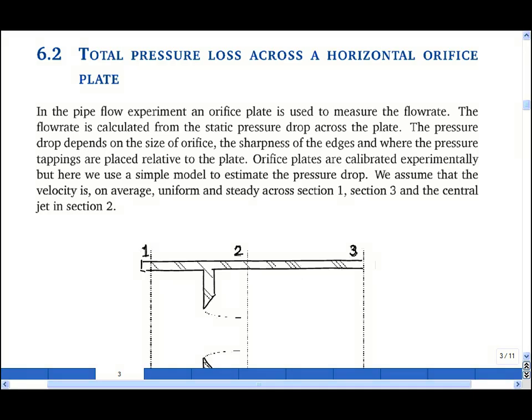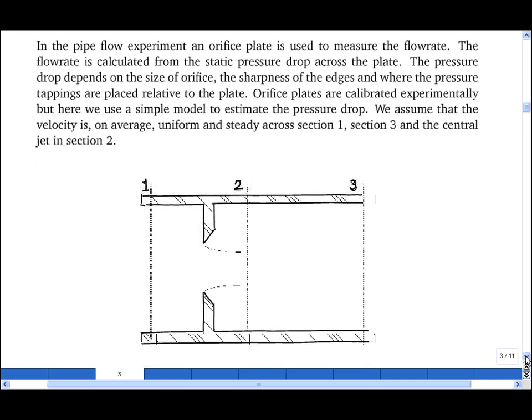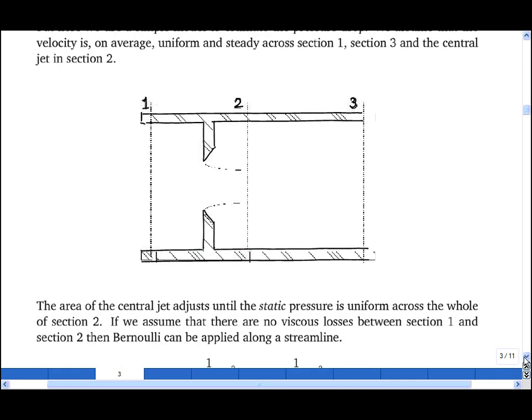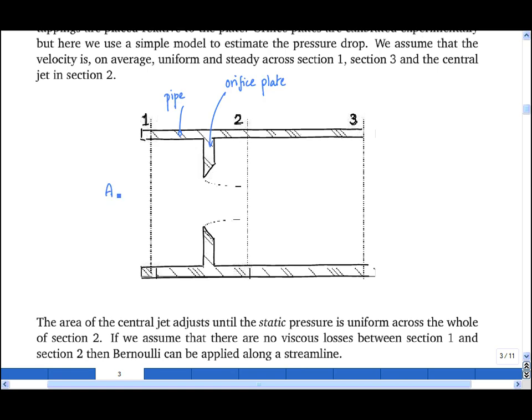We will start by calculating the total pressure loss across a horizontal orifice plate. An orifice plate is simply a plate with a hole in it put inside a pipe. The pipe has cross-sectional area A1 and inlet speed V1.